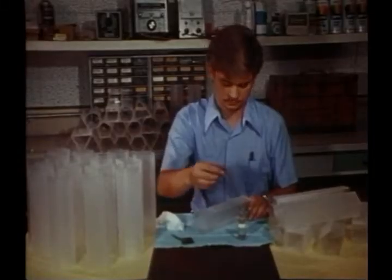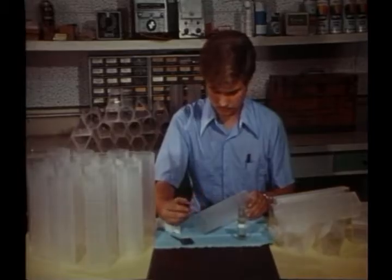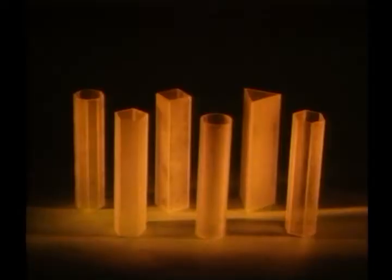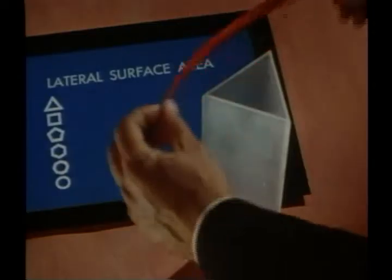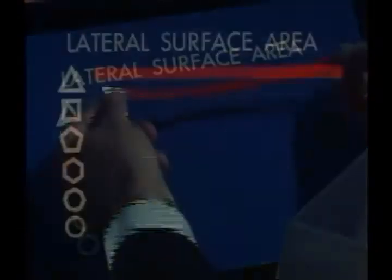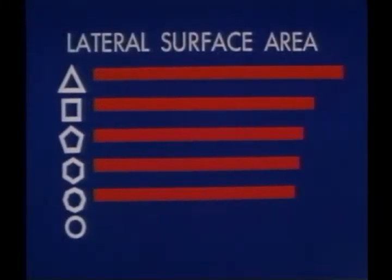We have made models in which each has the same volume and the same height. Which of these requires the least amount of material to build? That is, which has the smallest lateral surface area? Since the height is the same, the one with the shortest perimeter is the best. More sides mean less perimeter. Thinking of the cylinder as having an infinite number of sides shows that it uses the least material.